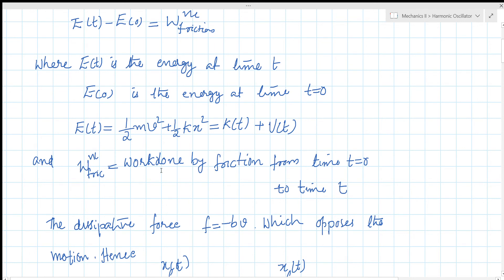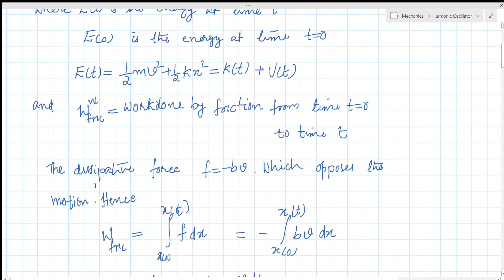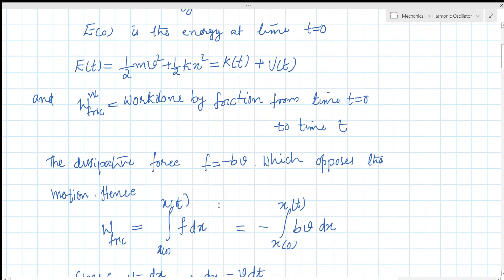For the dissipative force, F is equal to minus bv. The dissipative force is proportional to velocity, and the proportionality constant is b. The minus sign indicates the force acts in the direction opposing the particle's motion.